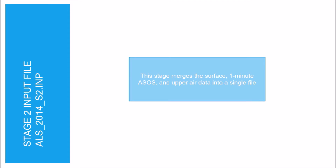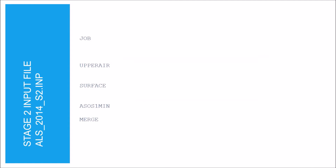The Stage 2 input file name is ALS_2014_S2.INP. The only purpose of Stage 2 is to merge the surface, 1-minute ASOS, and upper air data into a single file. There can be six sections in the Stage 2 input file, but the on-site section is optional and only needed if you have site-specific data, so we have five sections listed here.